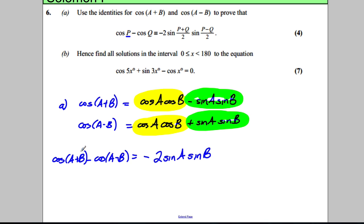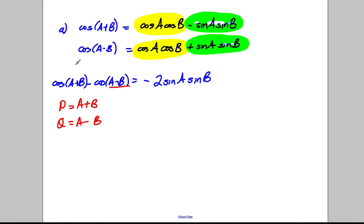Now at this point you let P equal A+B, so you let P equal A+B, and you let Q equal A-B. So Q is equal to A take away B. That could be P, that could be Q.